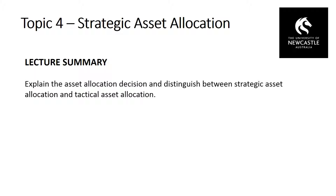There are two main approaches to the asset allocation decision: strategic asset allocation and tactical asset allocation. Strategic asset allocation is about identifying an optimal long-term asset allocation based on the particular characteristics and preferences of the investor.